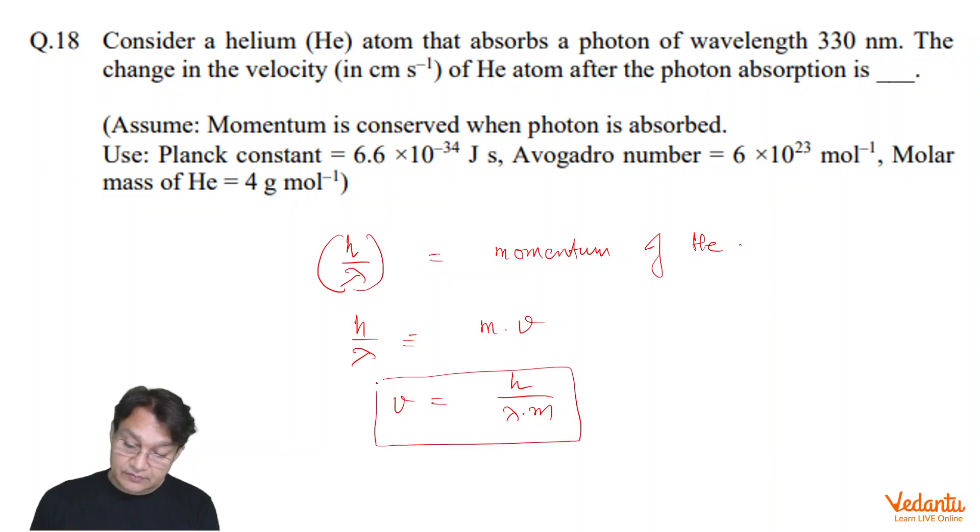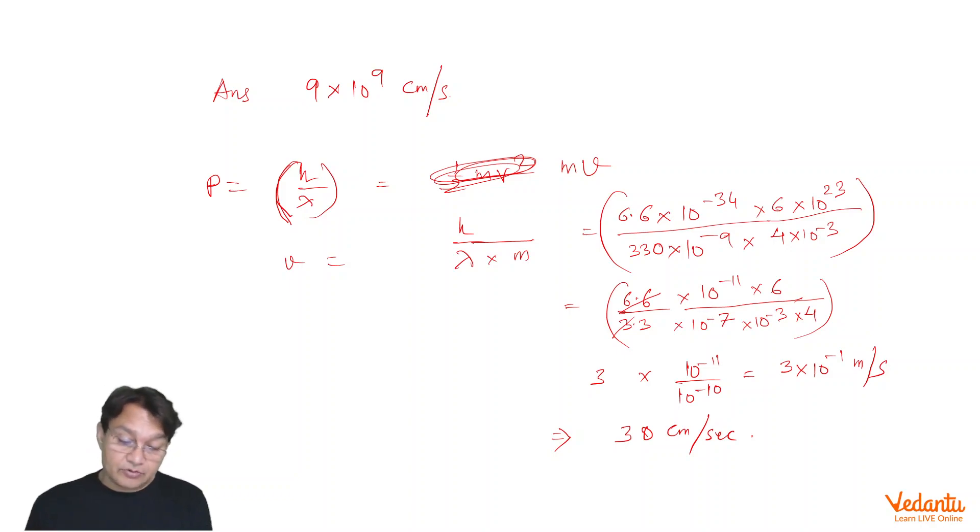Now let us find out how to get this velocity, calculation. So, calculation is p is equals to h by lambda, that is equals to mv and v is equals to h upon lambda by m.